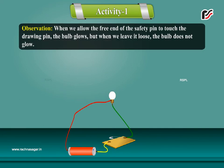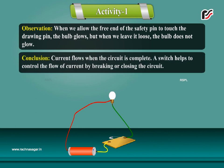Observation: When we allow the free end of the safety pin to touch the drawing pin, the bulb glows, but when we leave it loose, the bulb does not glow.